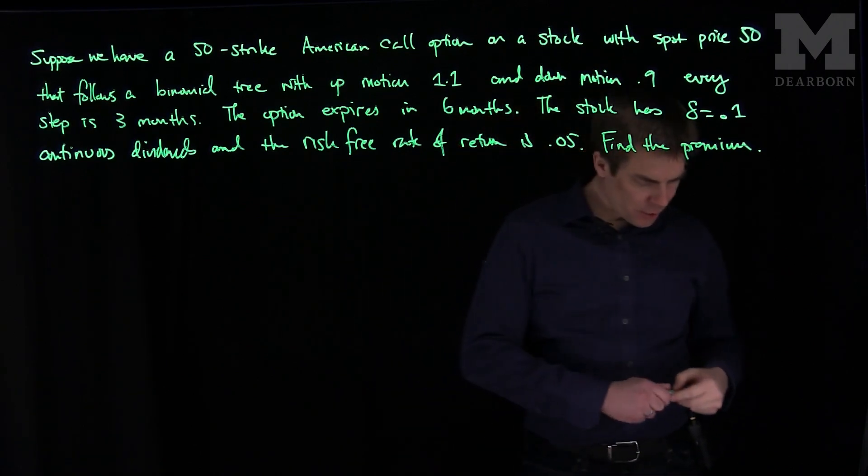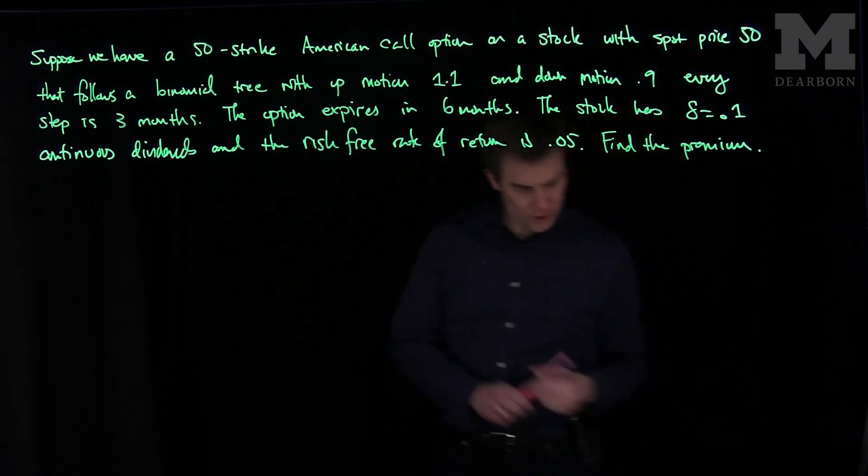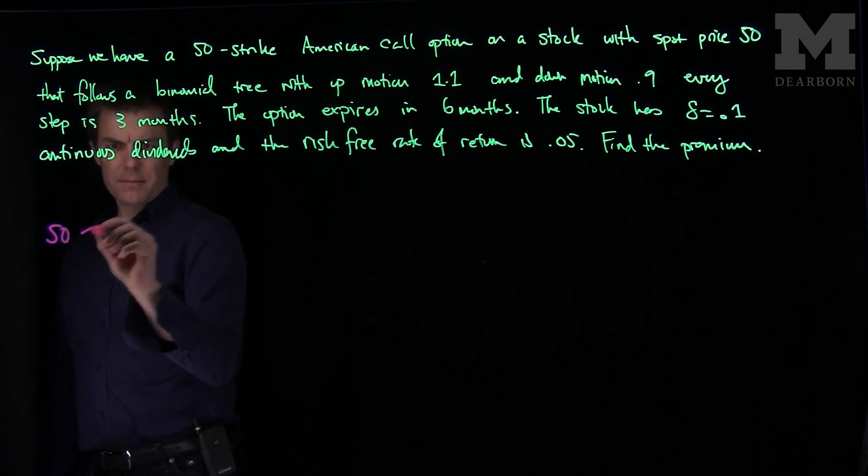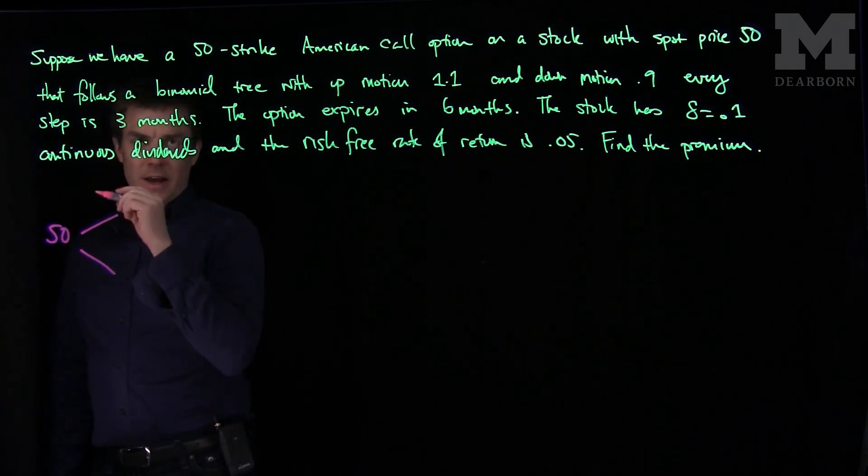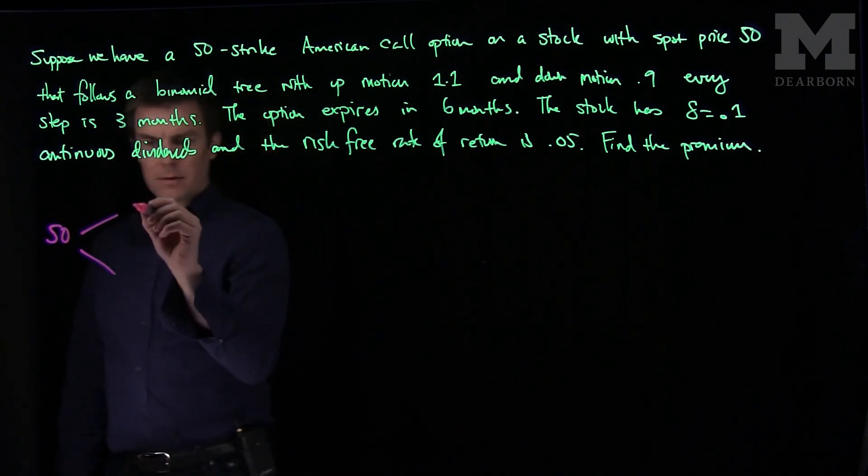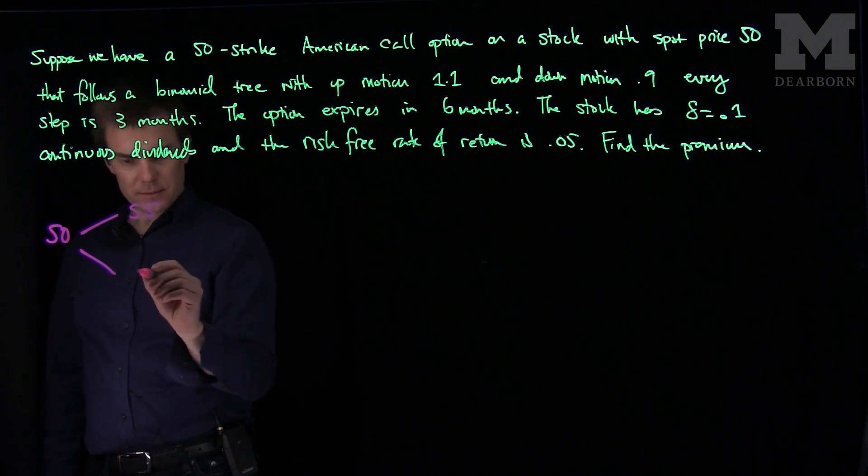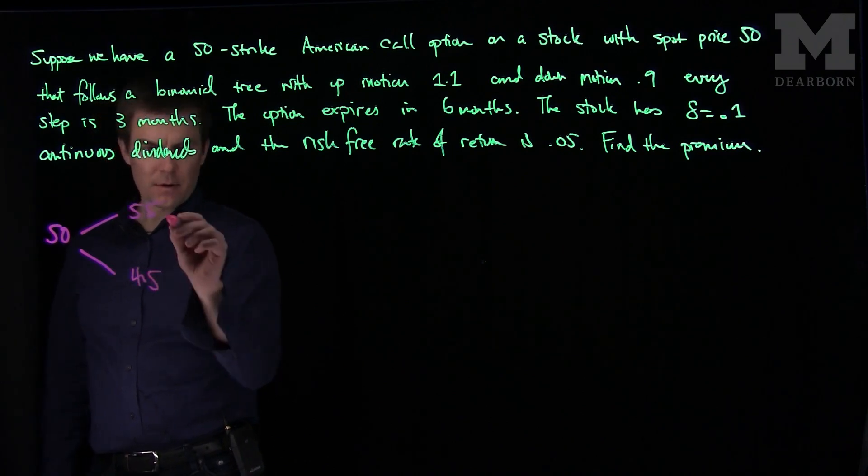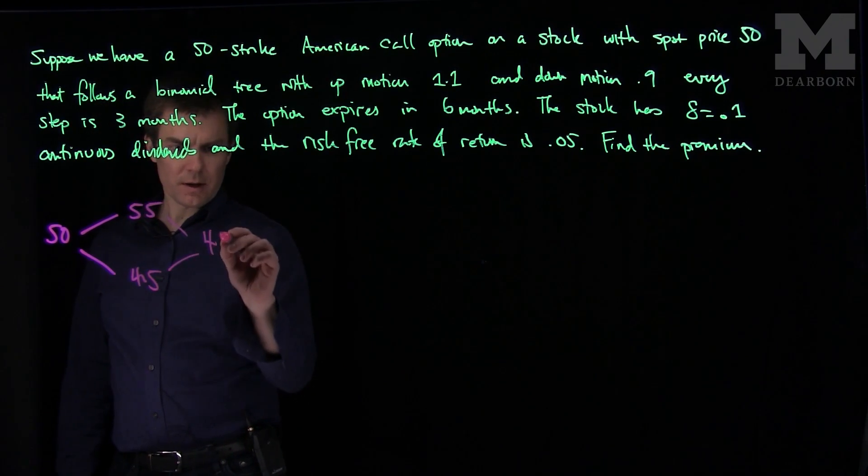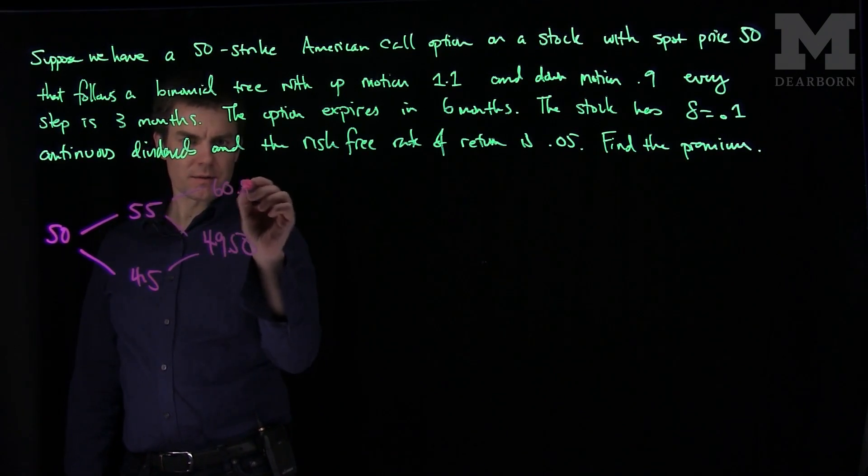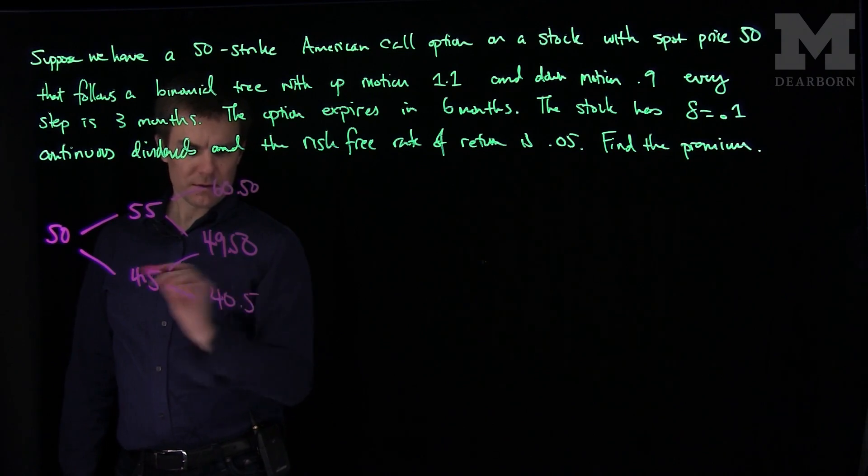So what we'll do is we'll set up our tree. Our tree will start at 50, and it's going up by 10% so 55, or down by 10% so that would be 45. Then we'll go down to 49.50, up to 60.50, and down to 40.50.